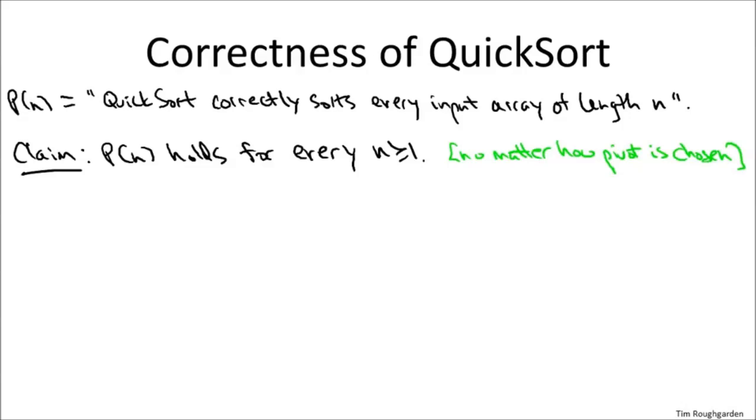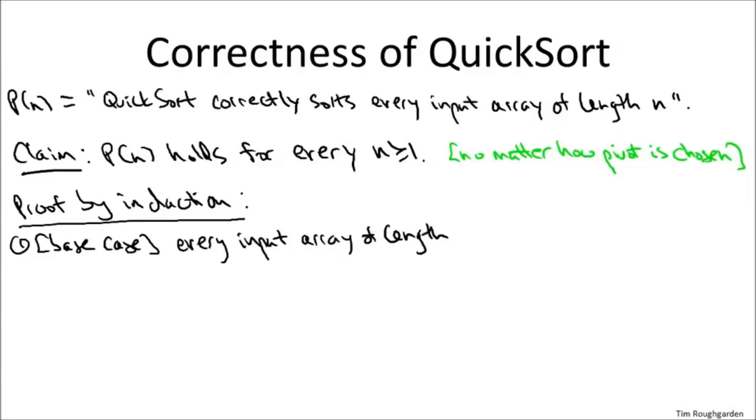So let's proceed by a proof by induction. For the base case, when n equals one, this is a fairly trivial statement. So then we're just talking about inputs that have only one element. Every such array is already sorted. QuickSort in the base, when n equals one, just returns the input array, it doesn't do anything, and that is indeed a sorted array that it returns. So by this rather trivial argument, we have directly proven that P(1) holds. We've proven the rather unimpressive statement that QuickSort always correctly sorts one element arrays. So let's move on to the inductive step.